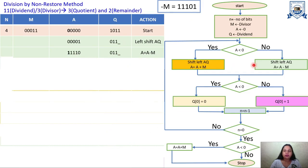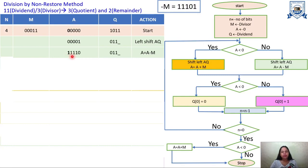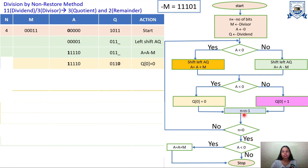We move to the next check: is A less than 0? To check, we look at the MSB of A. If it is 1, the value is negative. Here the MSB is 1, so A is negative — it is less than 0. Following the flowchart, we place 0 at position Q0. Then N is decremented: N = 4 − 1 = 3.